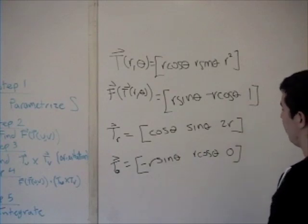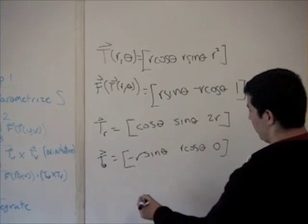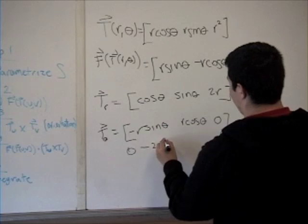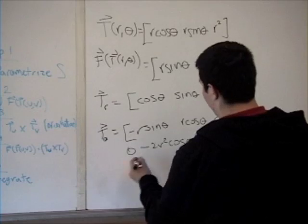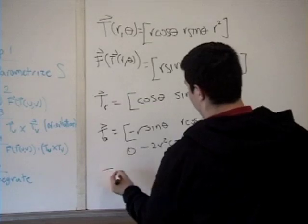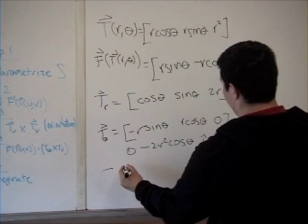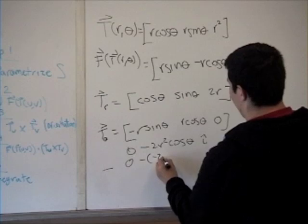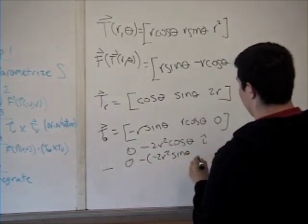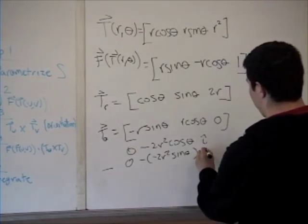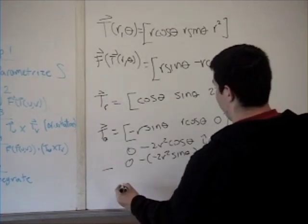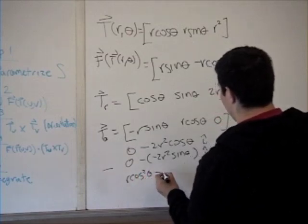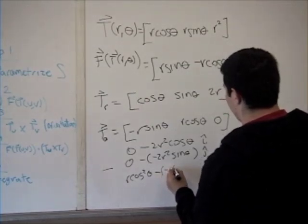Now we just take the cross product of this, and we see that we get 0 minus 2r² cos(θ) for our i component. And then for our j component, we have a negative outside, and we say 0 minus -2r² sin(θ). And then for our k component, we have r cos²(θ) minus r sin²(θ).